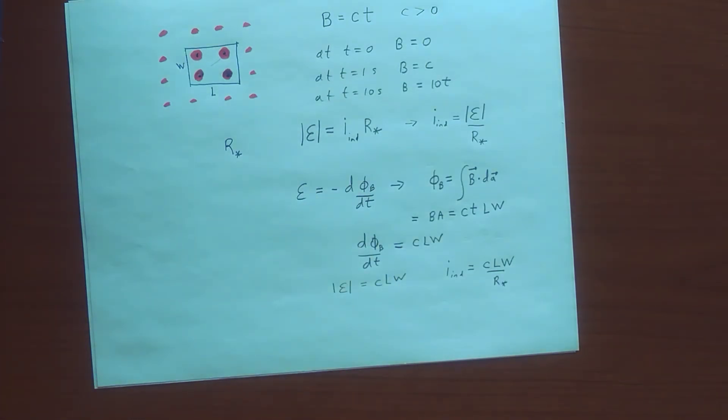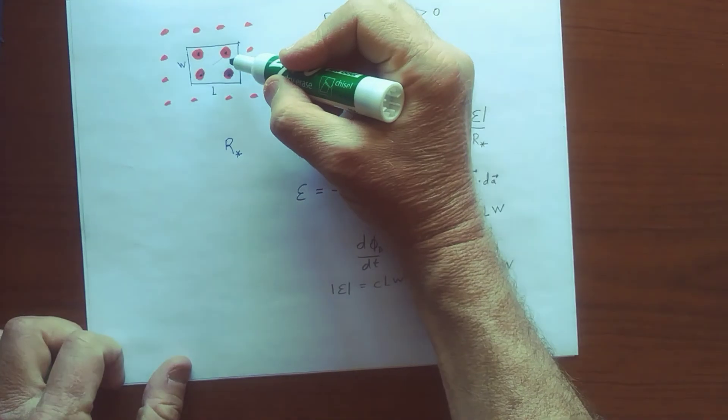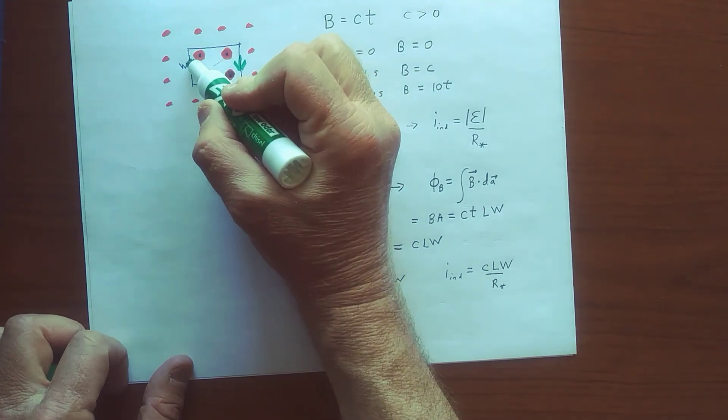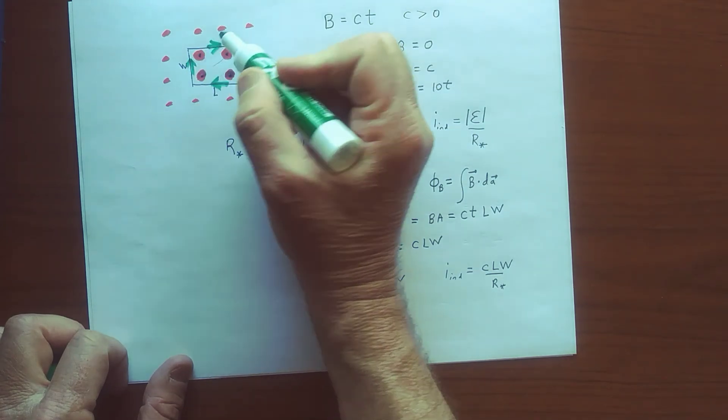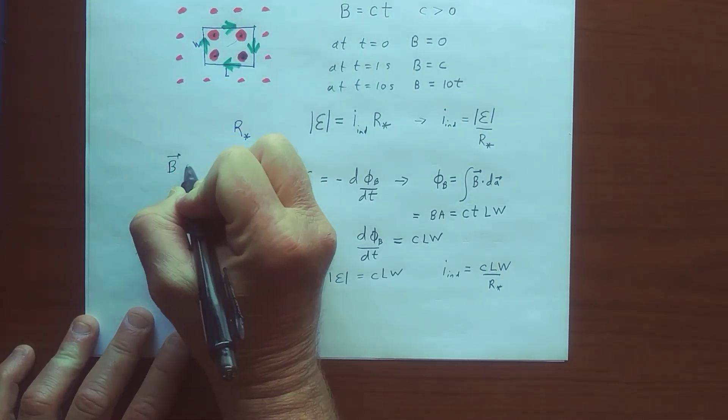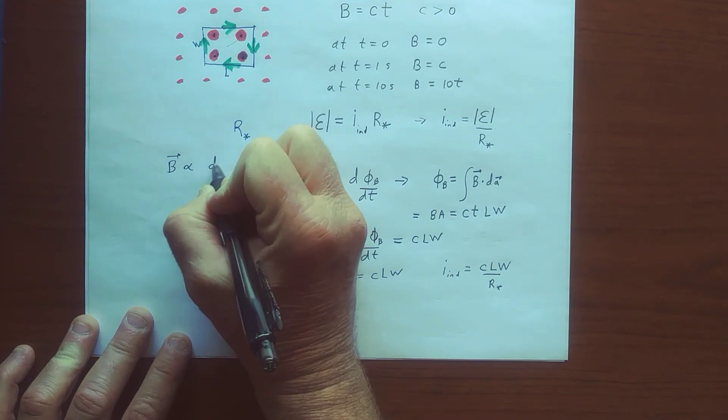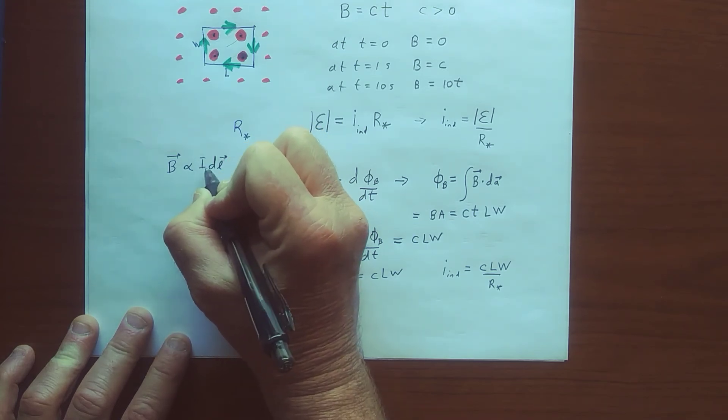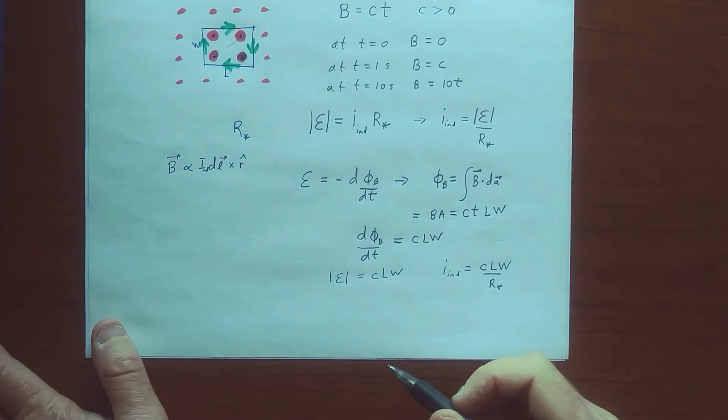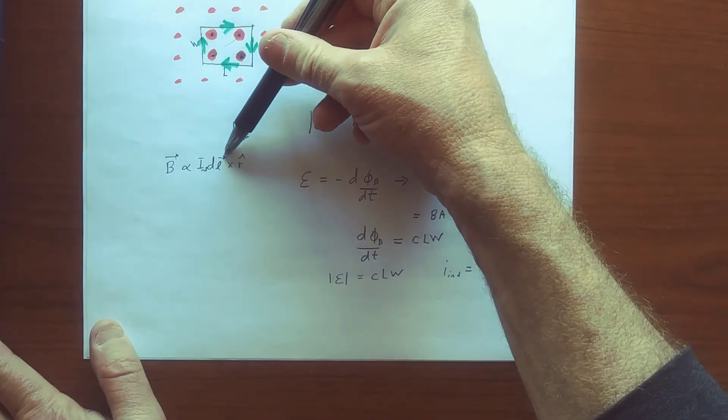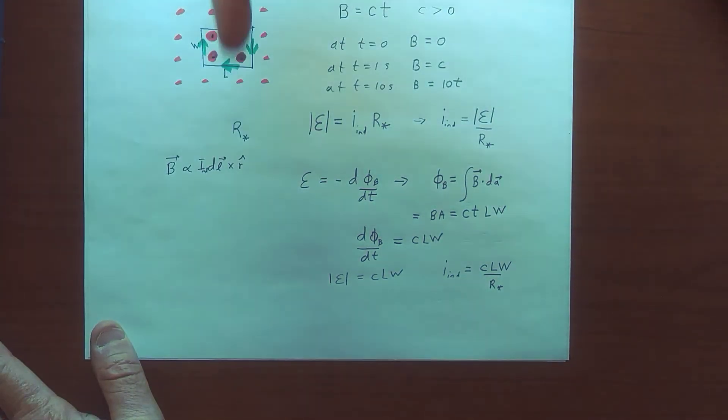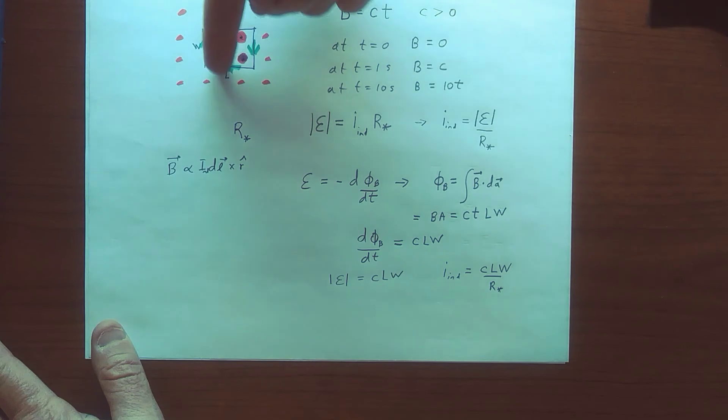And so by the right-hand rule, we want a current, an induced current that flows this way through the loop because magnetic field direction is given by that part of the Biot-Savart law, which now we're talking about the induced current cross R hat. And so dL, right, so the current here, current elements here,